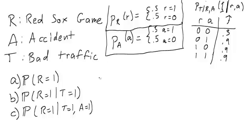So let's look at part A first. The probability that R is 1 is given to us over here. It's given to us at 0.5. That was easy.